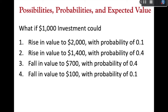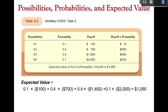Now we can do a more sophisticated case with four possibilities. Either it's a terrible investment where my $1,000 turns into $100 with a 10% chance (0.1), or it turns into $700 with a 40% chance (0.4), or it turns into $1,400 with a 40% chance, or my investment could be worth $2,000 with a 10% chance. The expected value: 0.1 × $100 = $10; 0.4 × $700 = $280; 0.4 × $1,400 = $560; 0.1 × $2,000 = $200.